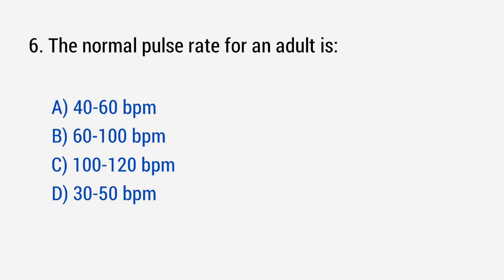Question number 6: The normal pulse rate for an adult is? The right answer is option B: 60 to 100 BPM.